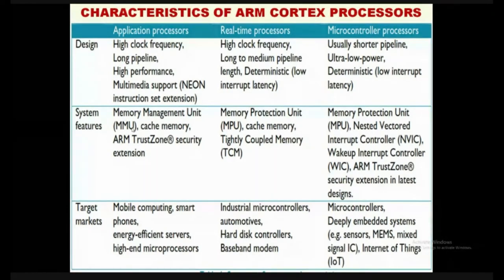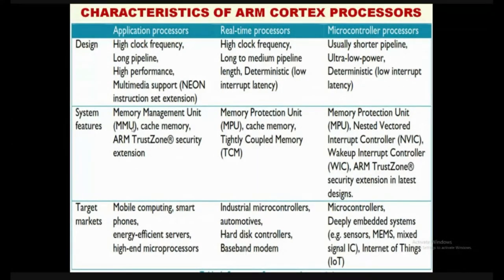There is also cache memory (very high-speed memory), and ARM TrustZone security extension — a trademark of ARM that ensures security for Cortex-A series processors. The target applications are mobile computing, smartphones, energy-efficient servers, and high-end microprocessors. Wherever there is audio and video, the ARM Cortex-A series processor core is sitting inside. For real-time processors, they also use high clock frequency and long-to-medium pipeline length — normally three or four stage pipelining.